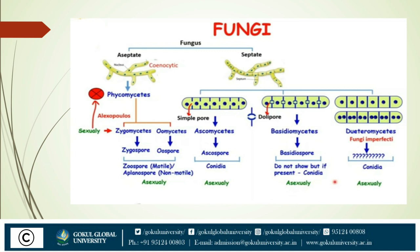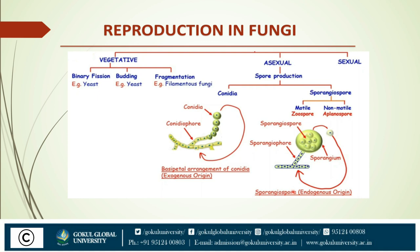Now we will study reproduction in fungi. There are three types of reproduction occurring in fungi: vegetative, asexual, and sexual. Vegetative is further divided into three types: binary fission, budding, and fragmentation. Binary fission occurs when an individual breaks into two. Budding is when a small bud grows on the main body and then separates from the parental body. Fragmentation occurs in filamentous fungi — they break into many minor fragments which then build new bodies.